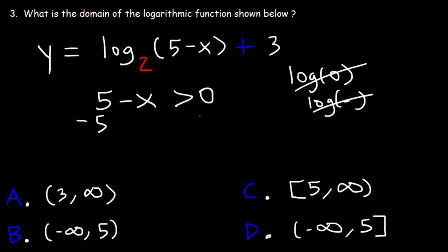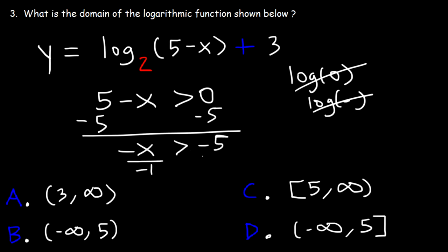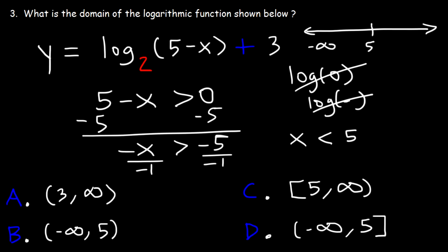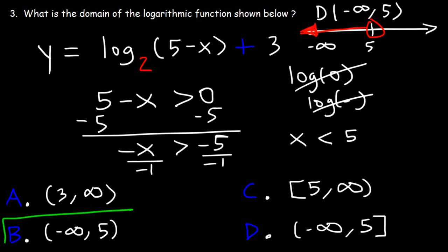So now let's subtract both sides by five. Negative x is greater than negative five. If we divide both sides by negative one, the inequality will change direction, so x is less than five. If we plot this on a number line, we have an open circle at five, and because x is less than five, we shade to the left. So the domain is from negative infinity to five, not including five. Therefore, B is the right answer.